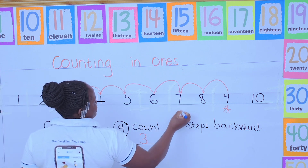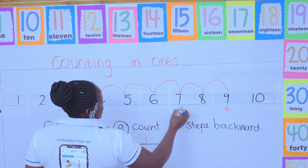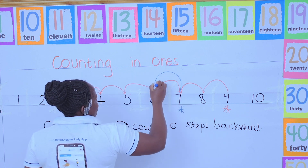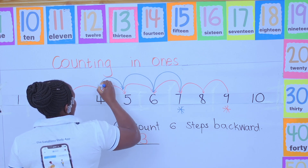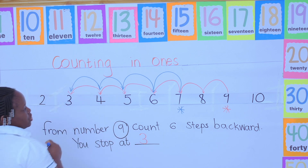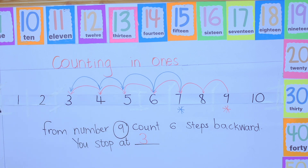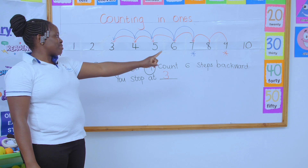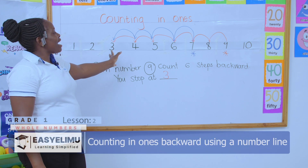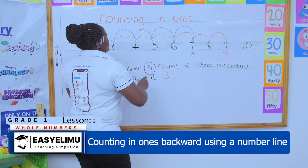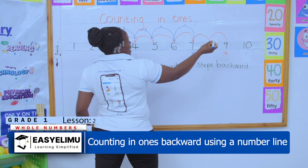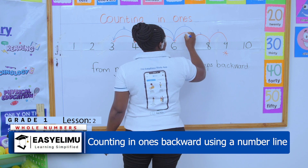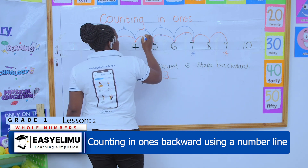My number seven is here, so the starting number is seven. From number seven, four steps backward: one, two, three, four. I am using a different pen so you don't confuse this with the first question. From number seven I counted step one, step two, step three, step four — and I stopped at three.